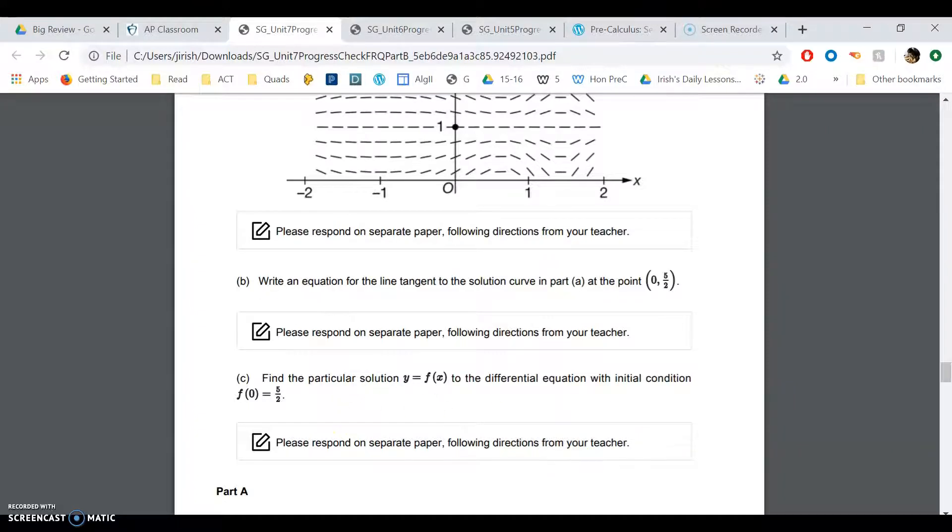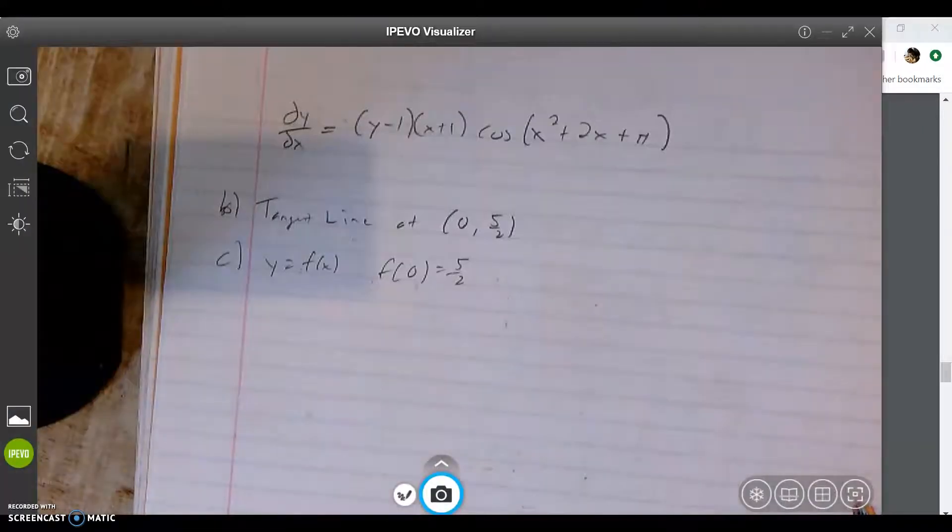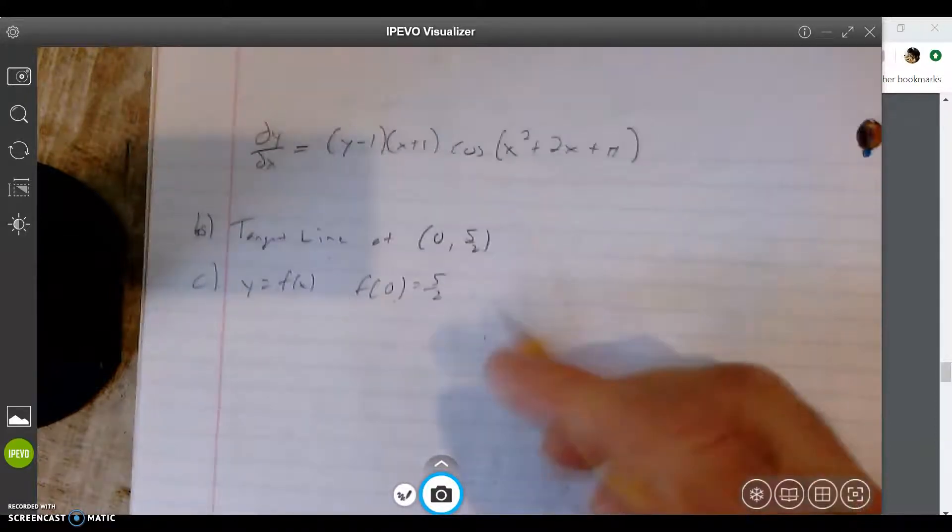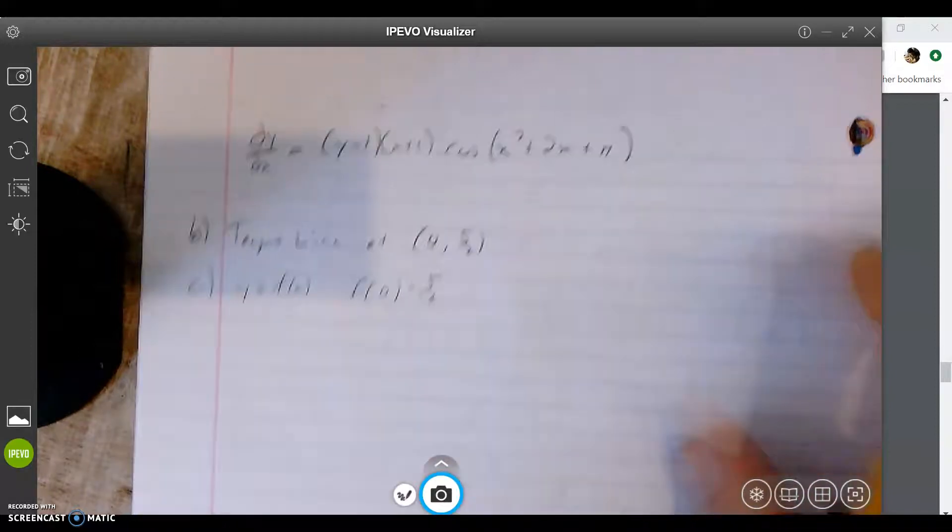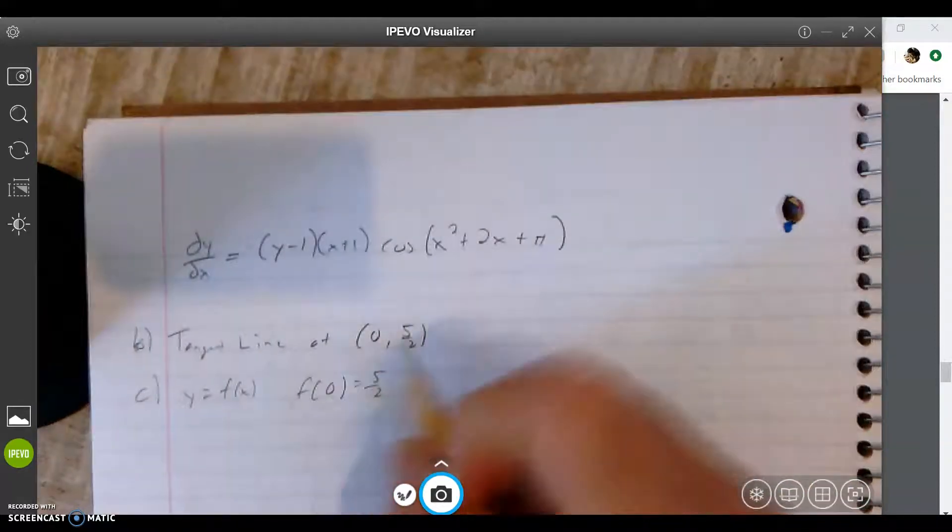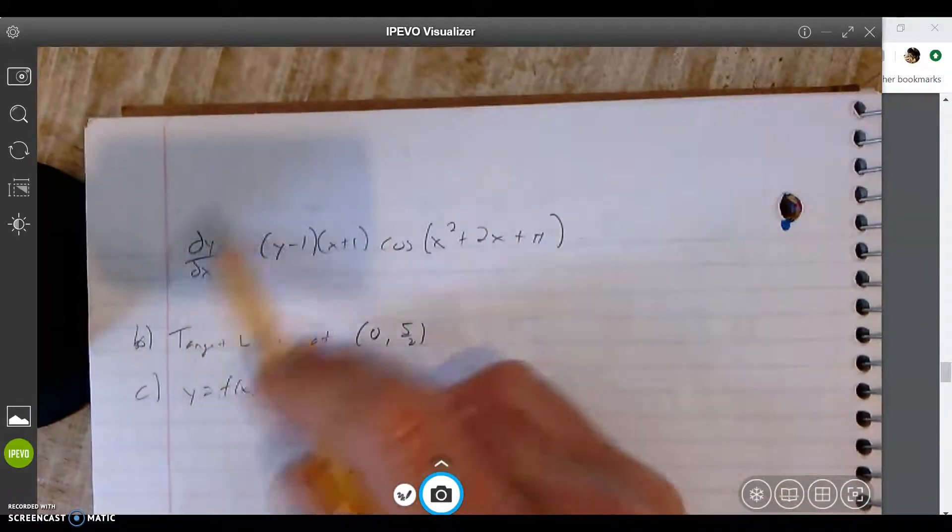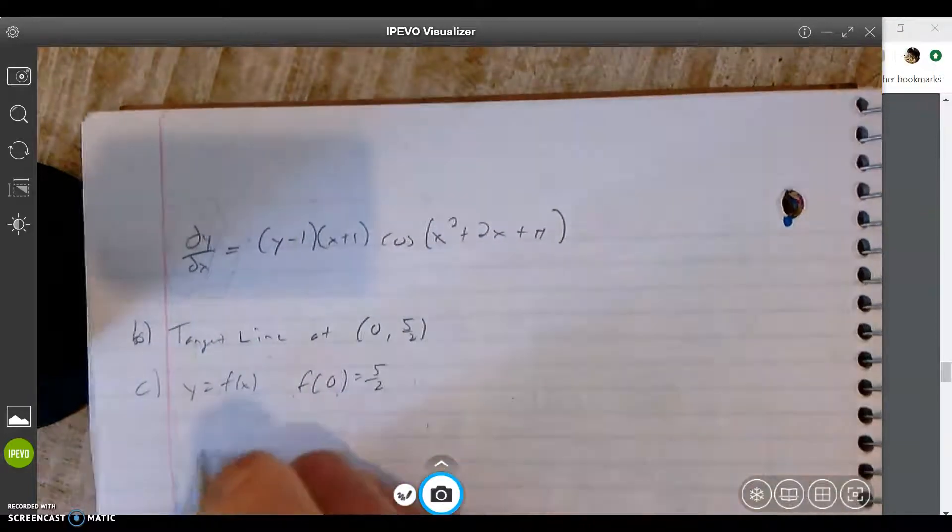Okay, let's try it. So the tangent line is at (0, 5/2). No problem. I need to find the slope, and this is the slope, isn't it? So I'm going to plug in.